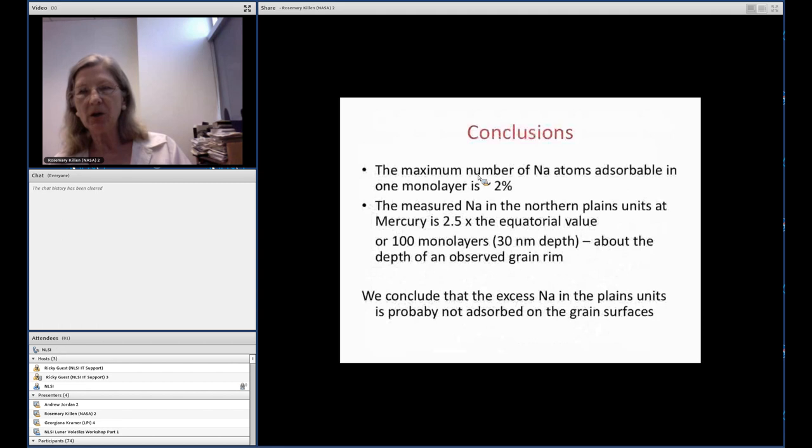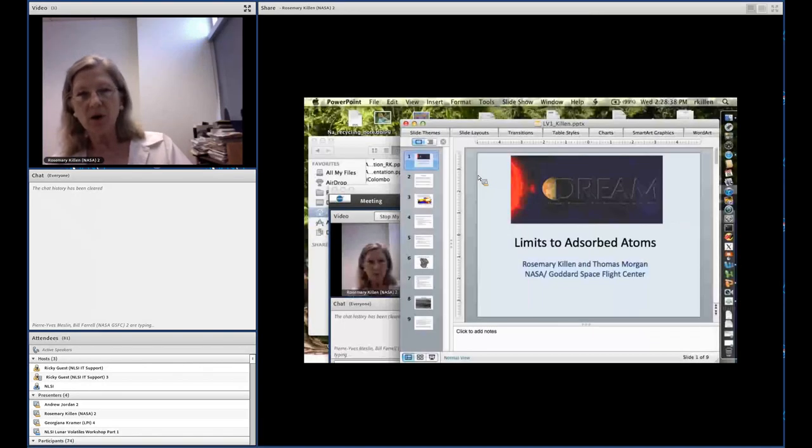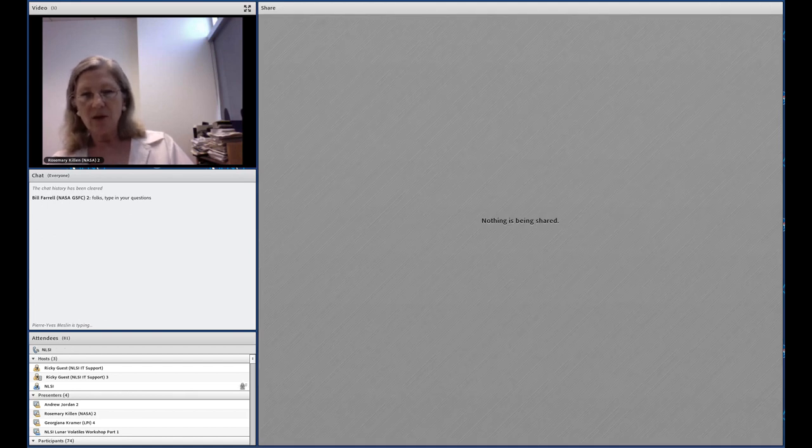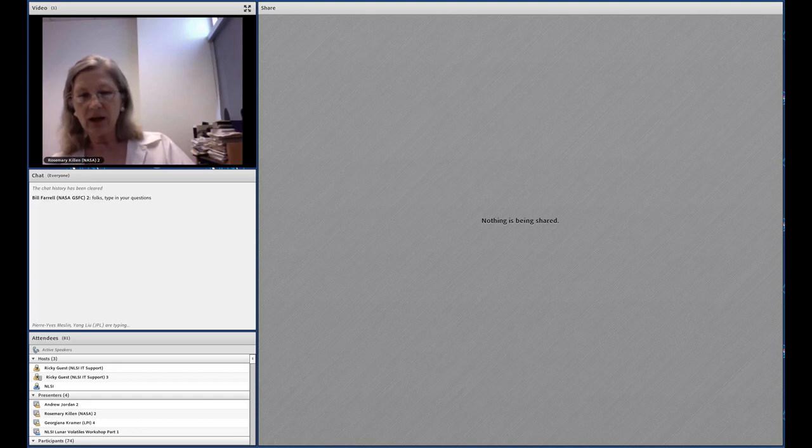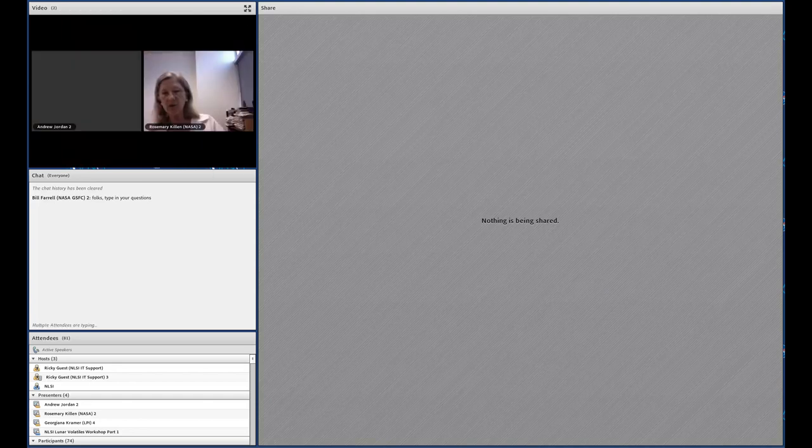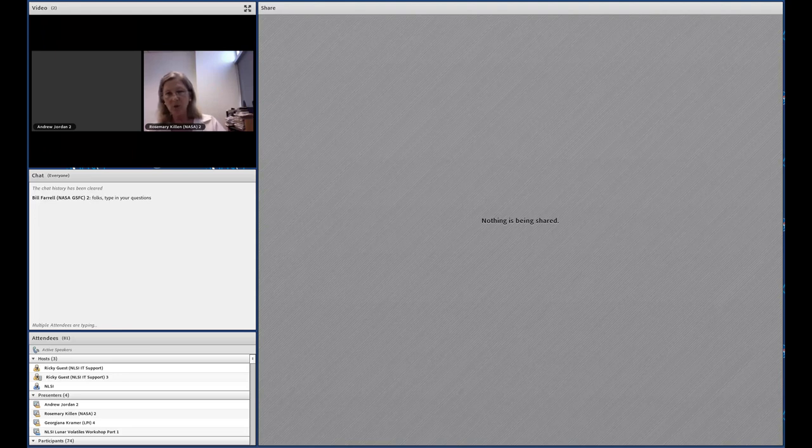Our conclusion is that the maximum number of sodium atoms absorbable in one monolayer is about 2%, but the measured sodium in the northern plains units at Mercury is 2 and a half times the equatorial value. You have to have something like 100 monolayers to increase the adsorbed sodium to the point where you would get to this observed value. We conclude that the excess sodium in the plains units is probably not adsorbed on the grain surfaces. It could have been cold trapped and diffused into the grain, or it could be indigenous to the northern plains units.